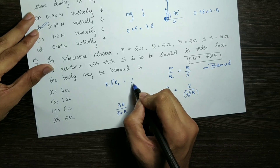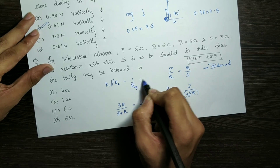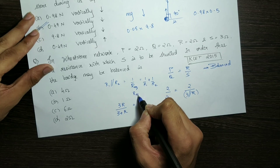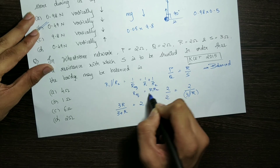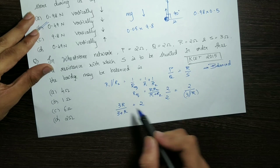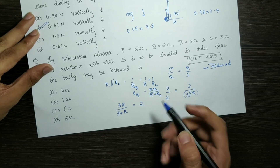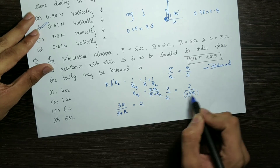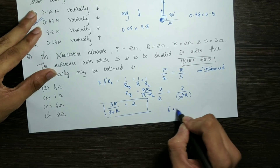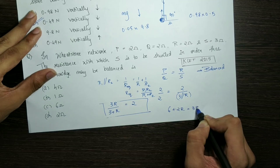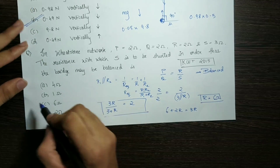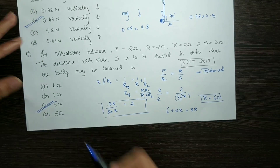So, 3R/(3 + R) = 2, because R1 and R2 are in parallel. Using 1/R = 1/R1 + 1/R2, R = R1·R2/(R1 + R2). One resistance is 3 ohms, the other is R, and the final resistance must equal 2. Solving this equation: 6 + 2R = 3R, so R = 6 ohms. Option C is perfectly correct.